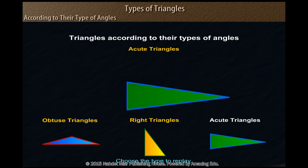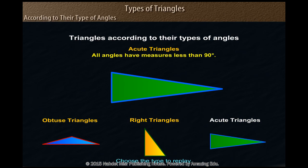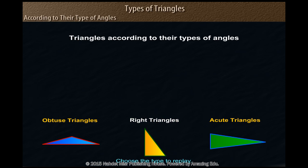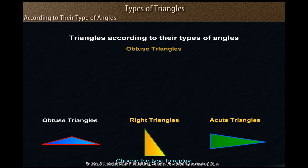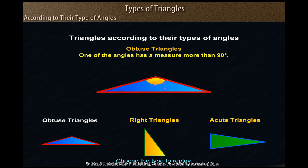Acute triangles: all angles have measures less than 90 degrees. Right triangles: one angle has a measure equal to 90 degrees. Obtuse triangles: one of the angles has a measure more than 90 degrees.